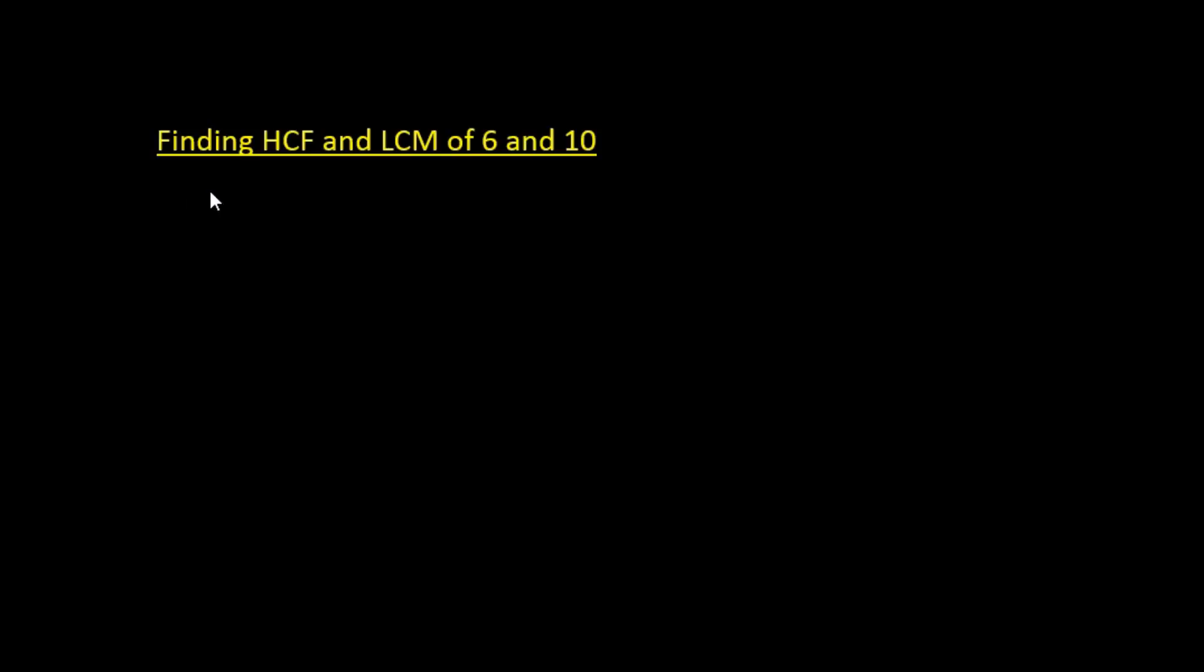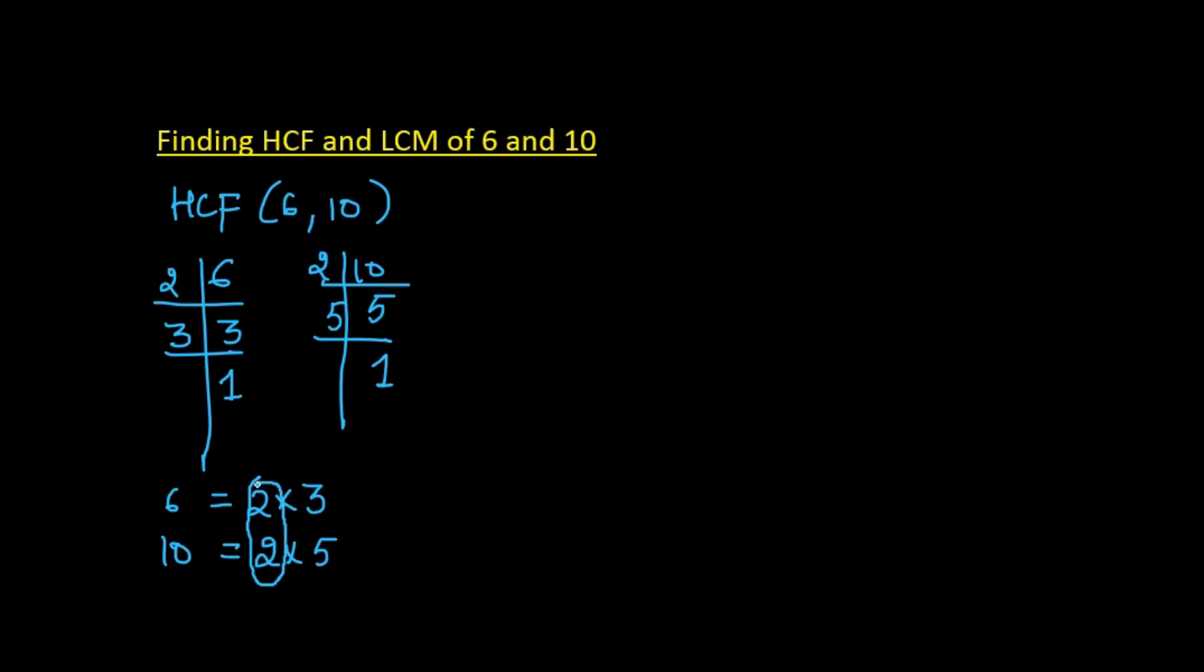To find the HCF of 6 and 10, I will use the prime factorization technique. I prime factorize 6 as 2×3, and 10 as 2×5. So 6 is the product of prime numbers 2×3, and 10 is 2×5. The common factor here is 2, and hence the HCF of 6 and 10 is 2.